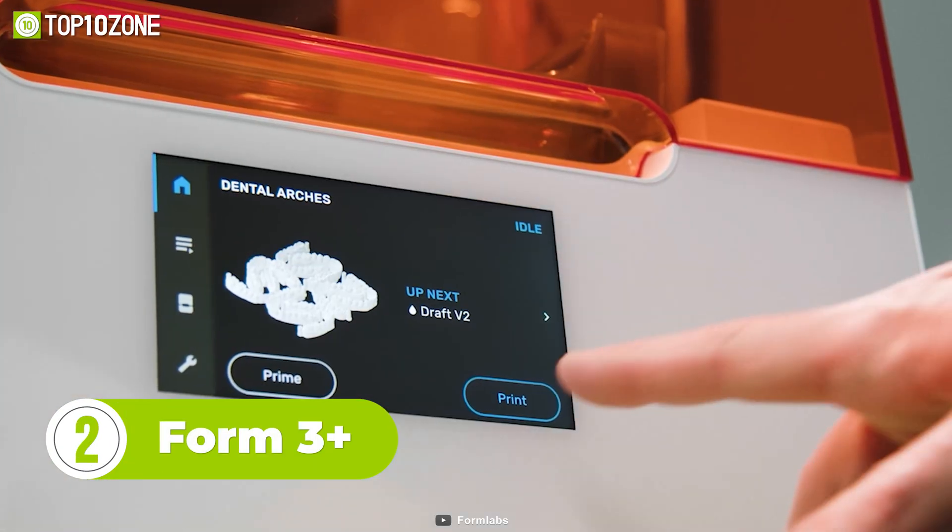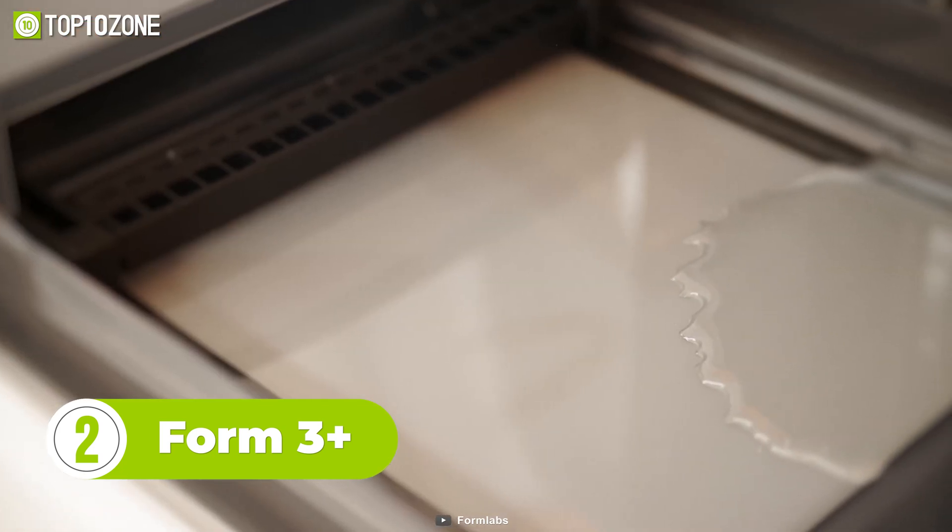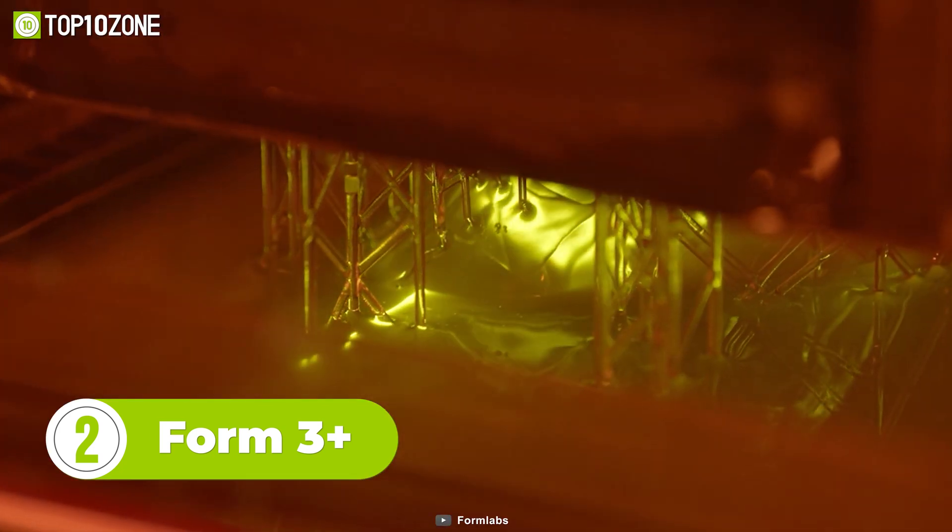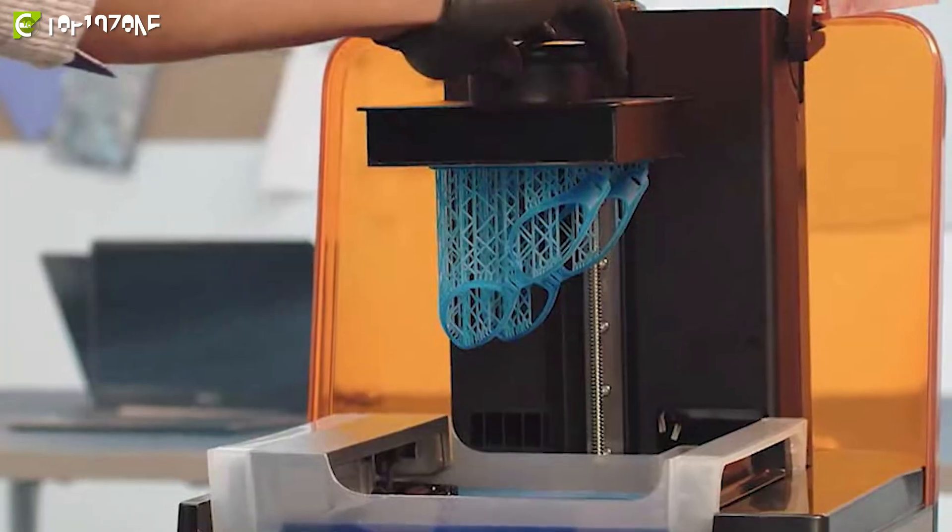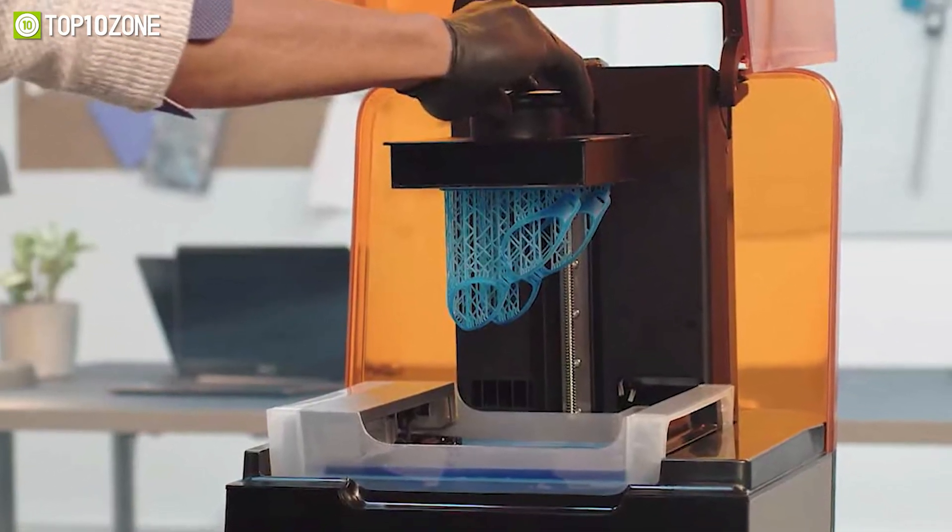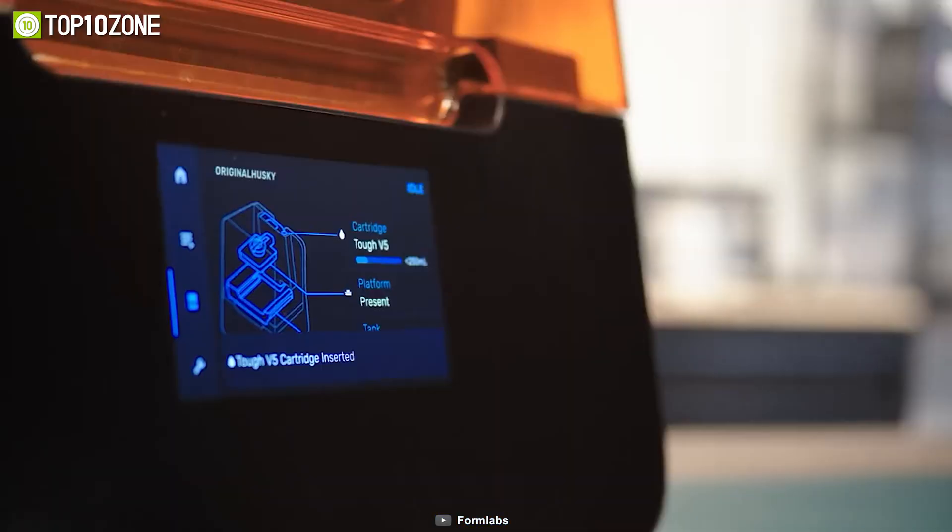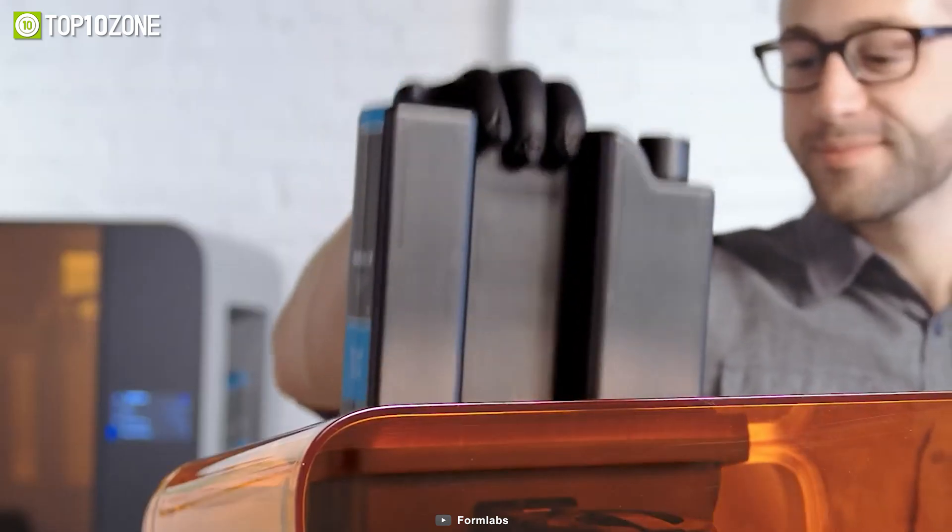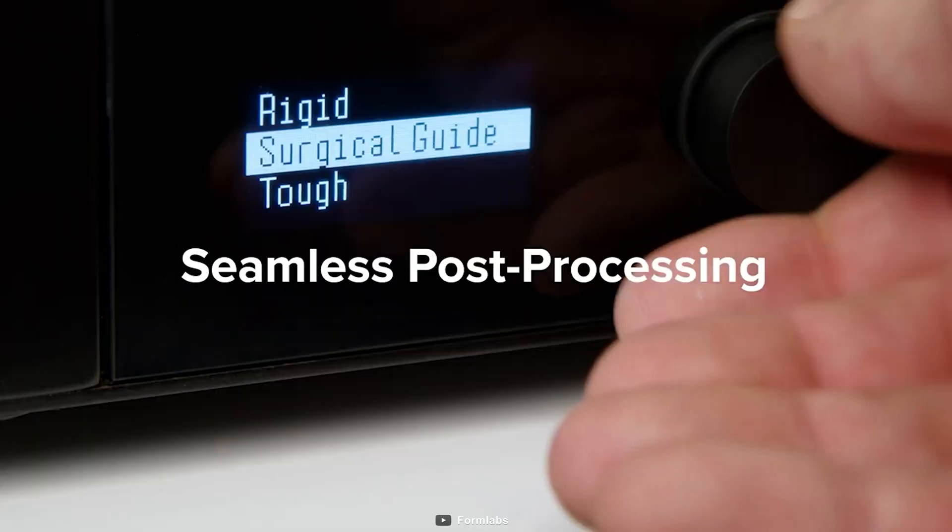Form 3 Plus is an affordable, industrial-quality resin 3D printer that delivers rapid, flawless prints in record time. It incorporates a high-intensity layer and precisely tuned settings to deliver rapid print speeds. In addition, the enhanced light touch support structures detach from parts in seconds to save post-processing time.